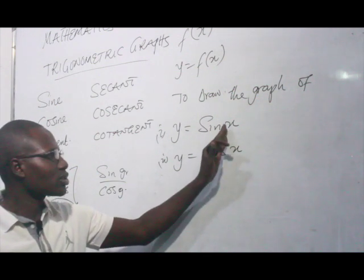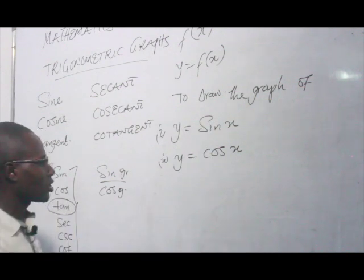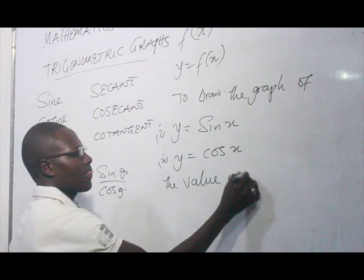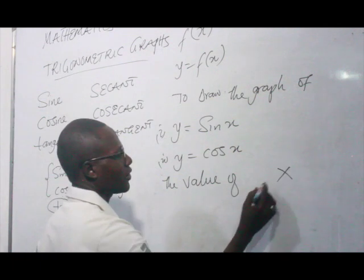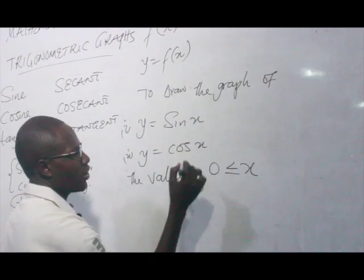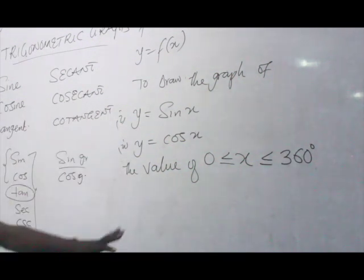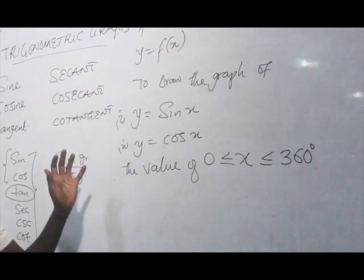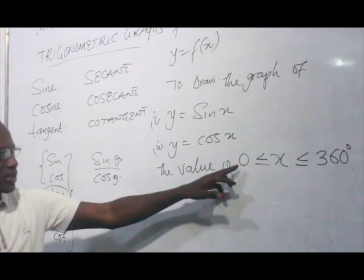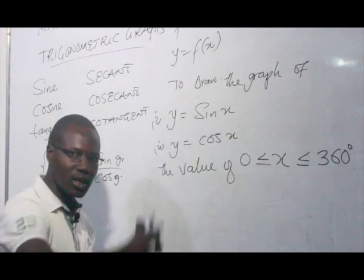We can assume the values of x if they are not given. But if the values of x or the angles are given, then we just take the angle and see how we can manipulate the values. Let's assume that x ranges from 0 degrees to 360 degrees. The total angle in a cycle — the complete revolution — is 360 degrees.